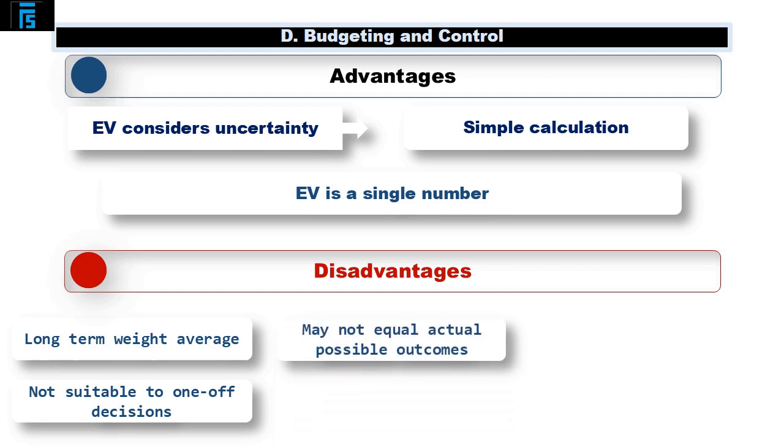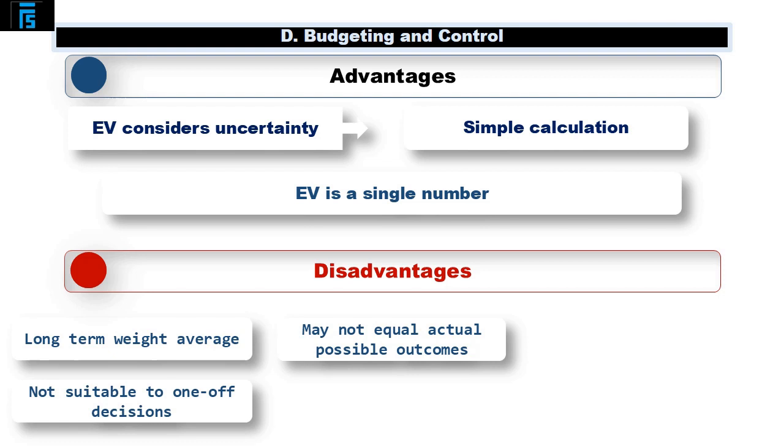The expected value may not equal any of the possible outcomes. In the above example, the expected value of 140,000 did not equal any of the possible outcomes of 220,000, 120,000, or 40,000.